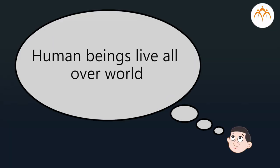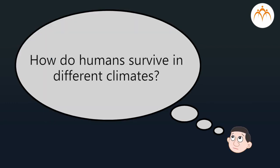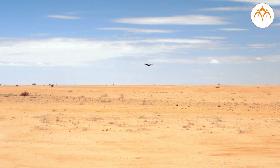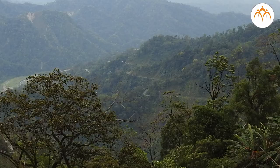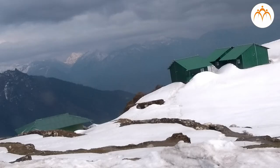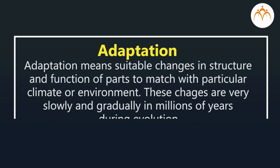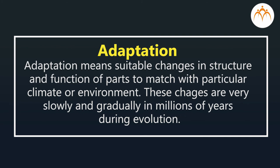Thus, all living organisms adapt to their surroundings and manage to survive. Now a challenge for you: human beings live all over the world — how do humans survive in different climates? In summary, climate differs in different parts of the world, and organisms must adapt to survive. This means we cannot find all organisms everywhere on Earth.